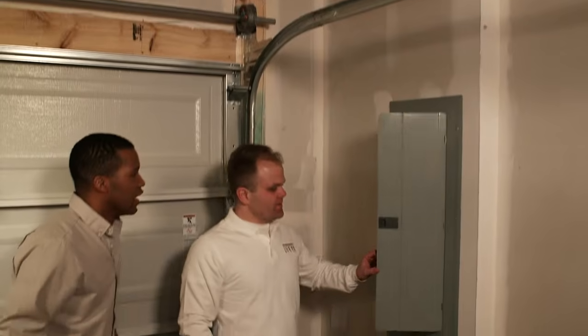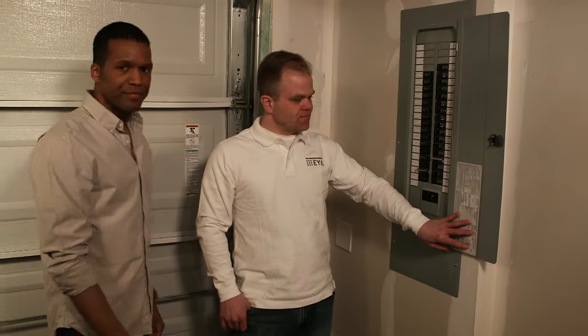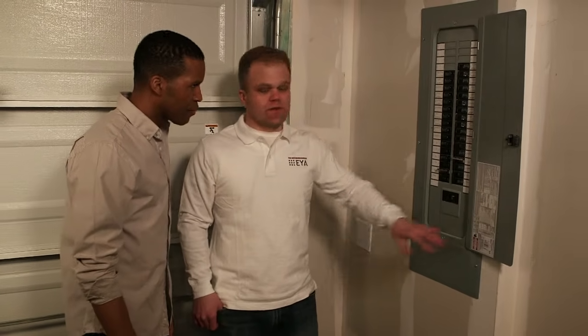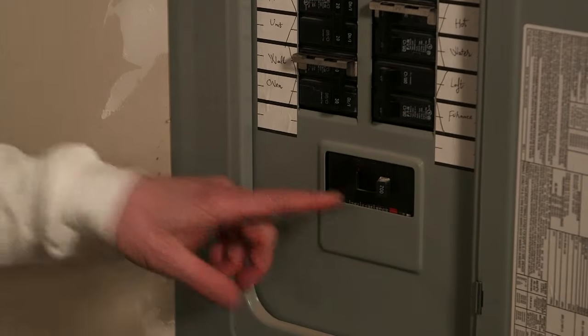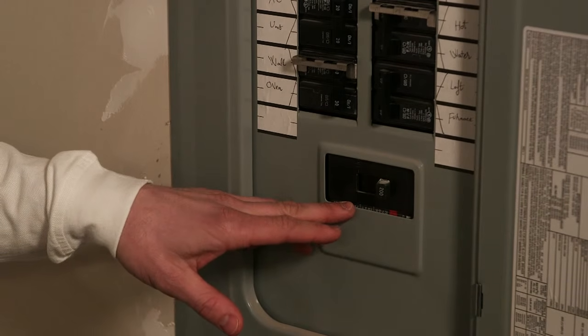All right, so here we have your circuit panel box. In here you'll find all the circuit breakers for everything inside your home. Starting at the bottom here, you have the main circuit breaker. Hopefully you should never have to touch this one, but this would cut off the power to the entire house.